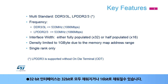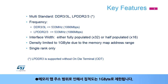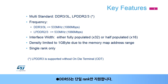The 32-bit interface width can be either fully populated, 32-bit, or half-populated, 16-bit. Note the device may also be packaged with the 16-bit DDR interface only. Density is limited to 1 GB due to the memory map address range. DDRSS supports single rank only.